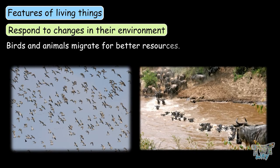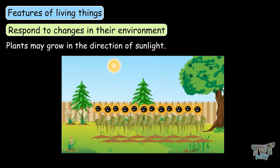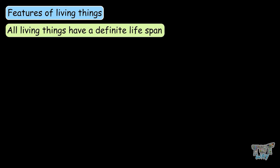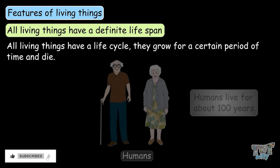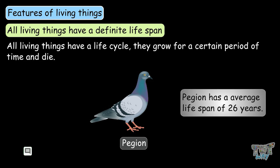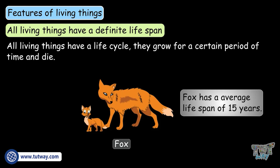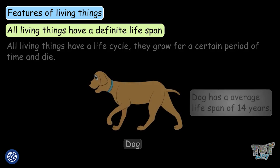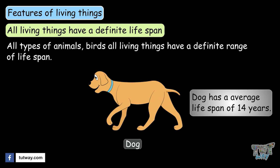Birds and animals migrate for better resources. Plants may grow in the direction of sunlight. All living things have a definite lifespan — they grow for a certain period of time and then die. For example, humans live for about 100 years, cows live for about 20 years, pigeons have an average lifespan of 26 years, mice have an average lifespan of 4 years, foxes 15 years, and dogs 14 years. So all types of animals, birds, and all other living things have a definite range of lifespan.